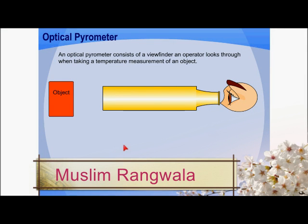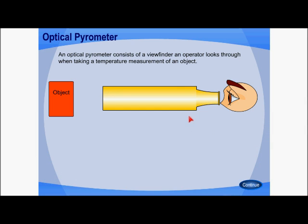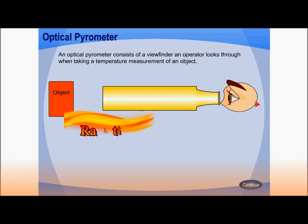Hi everyone. Today we will see how an optical pyrometer works in a simple manner. The word 'optical' means to view electromagnetic radiation, and 'pyro' means fire in Greek. So it is a device in which the operator has to view the radiation coming out from an object in order to measure temperature.